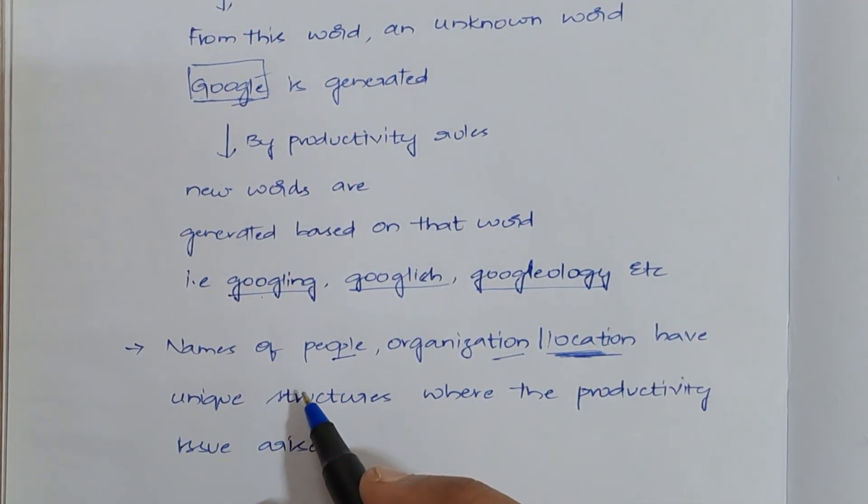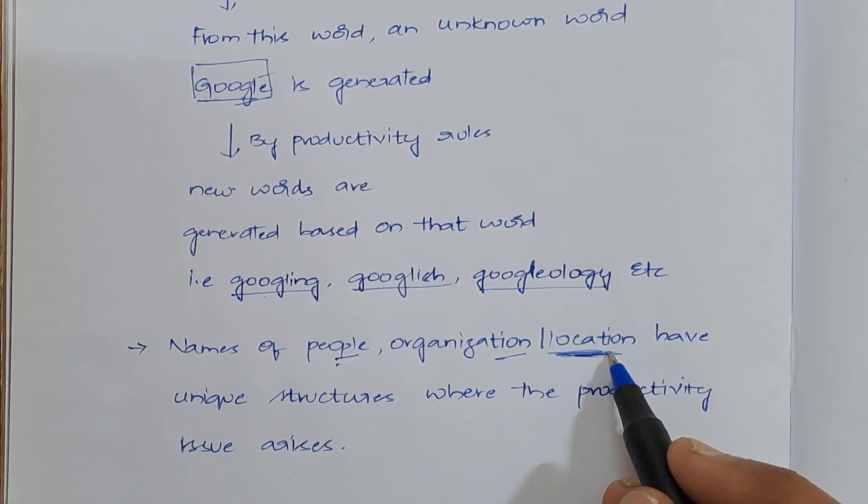When you take an example of names of people, organization, or location, there will be some words which do not have any meaning for those names, right? Thereby, productivity issue arises.